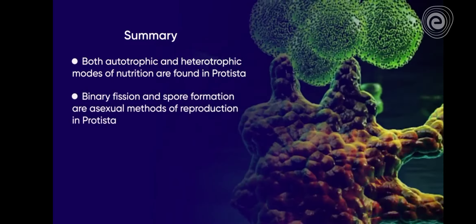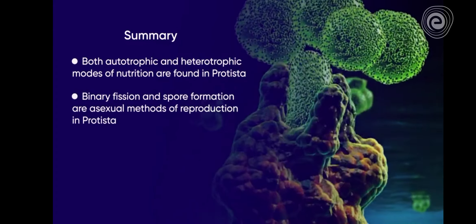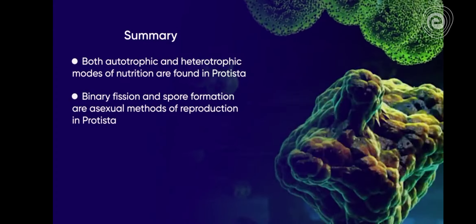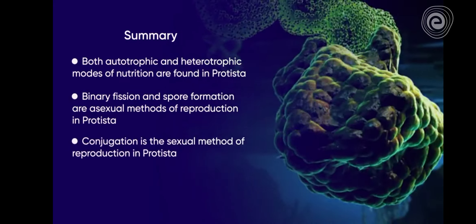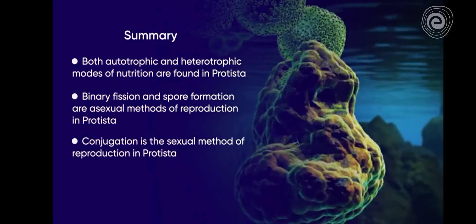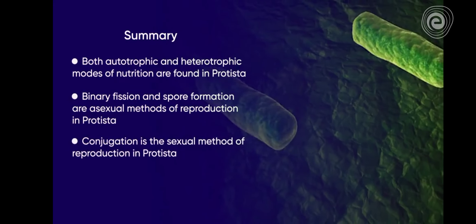Binary fission and spore formation are asexual methods of reproduction, while conjugation is the sexual method of reproduction.